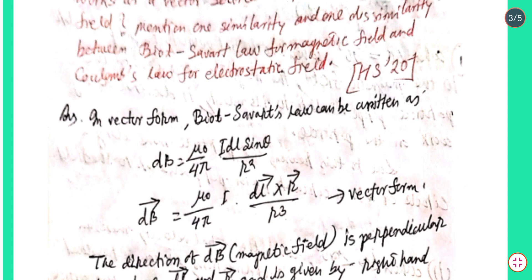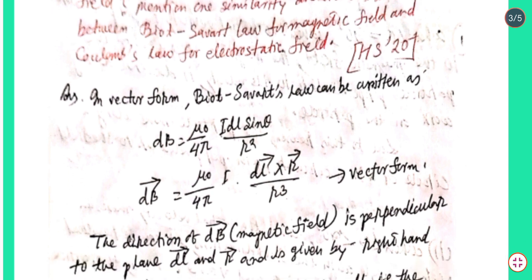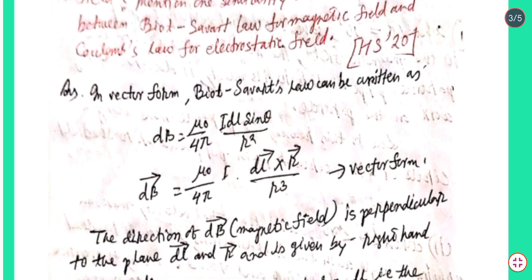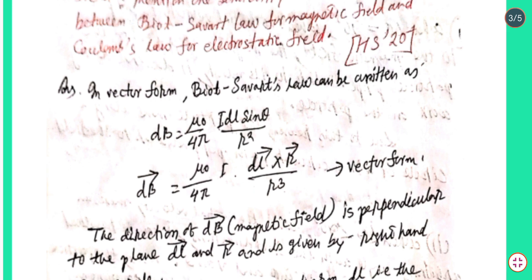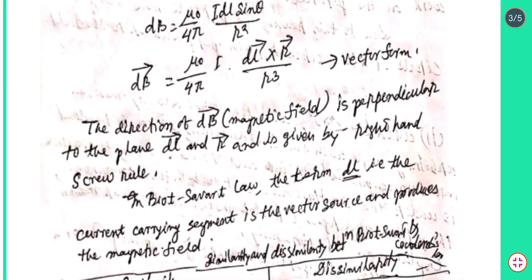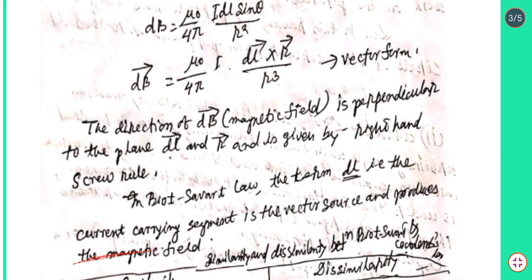The direction of dB, that is the magnetic field, is perpendicular to the plane of vector dl and r, and is given by the right-hand screw rule. In Biot-Savart law, the term dl — that is, the current-carrying segment — is the vector source and produces the magnetic field.